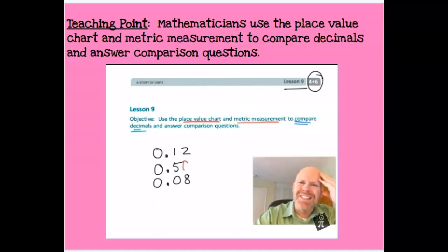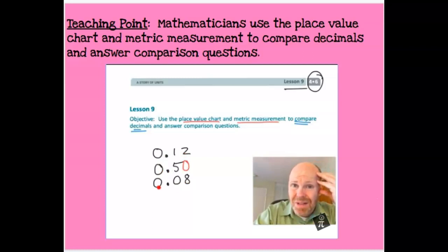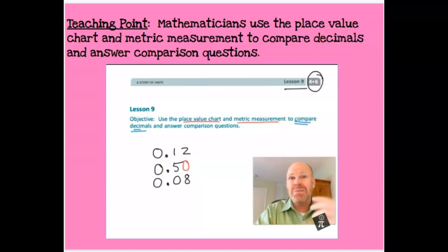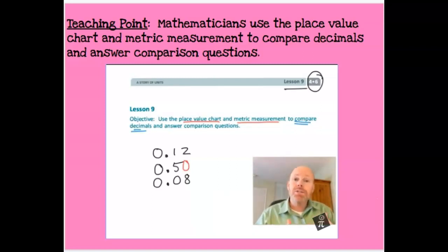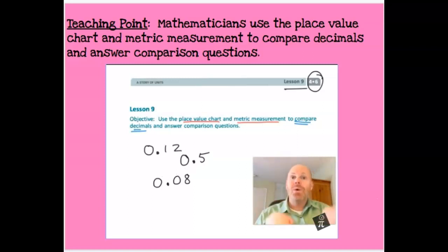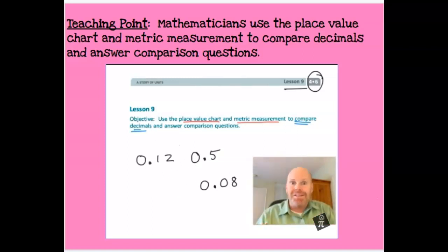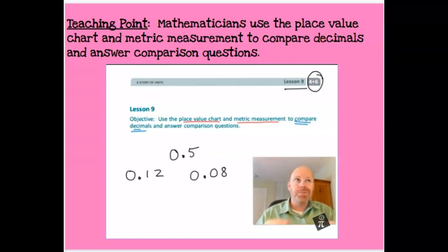While lining up decimals and filling in zeros allows the student to come up with the right answer, it does not teach the student about decimals and the meaning of decimals and the meaning of the place values. It just helps the kid get the answer. So what this lesson is about is helping students compare decimals in a way where students develop an understanding of decimals, not just develop some sort of trick for how to compare decimals.